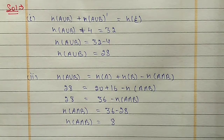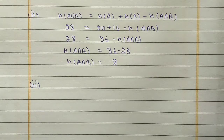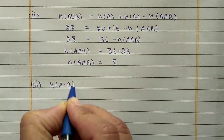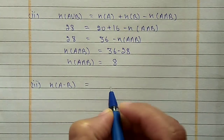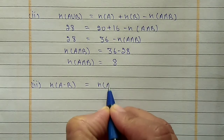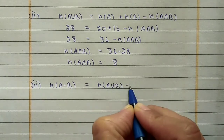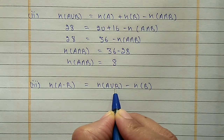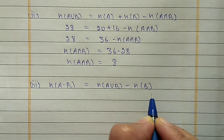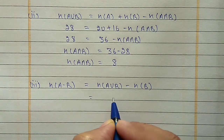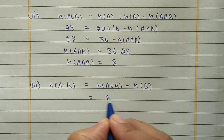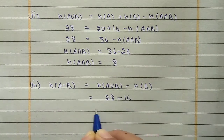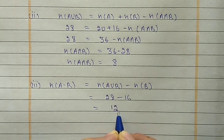For the third part, we find N(A - B) using the second property: N(A - B) = N(A∪B) - N(B). N(A∪B) is 28 and N(B) is 16, so 28 - 16 = 12.